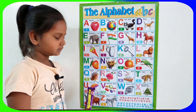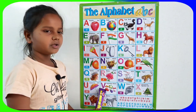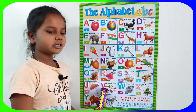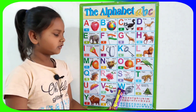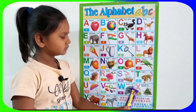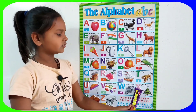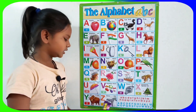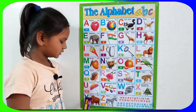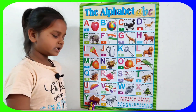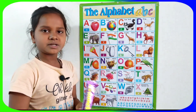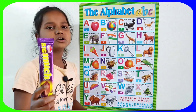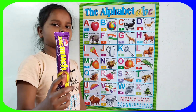U for umbrella, V for vegetables, W for watch, X for xylophone, Y for yard, Z for zebra.